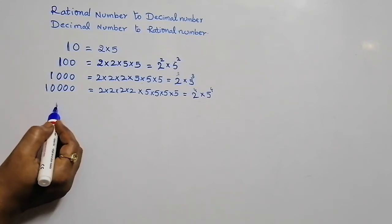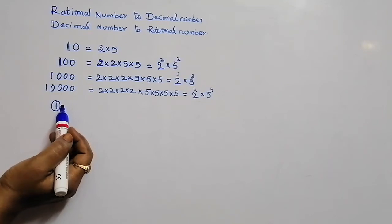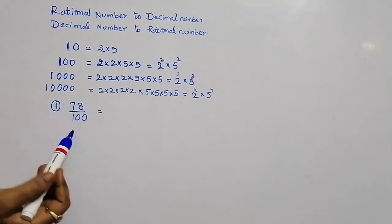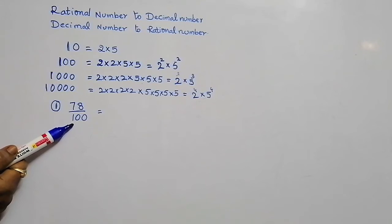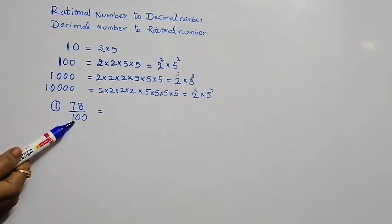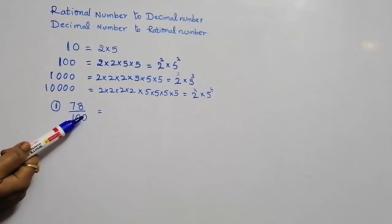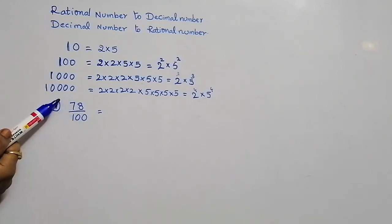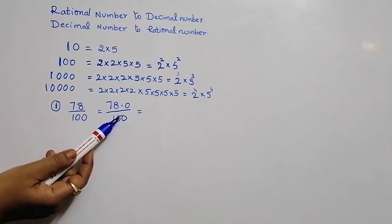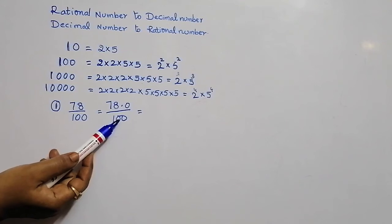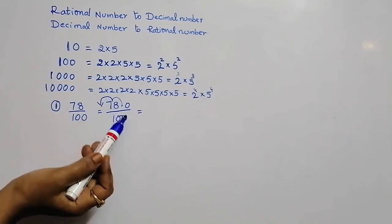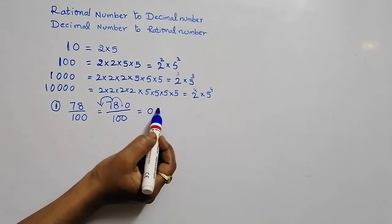Let us recall some basics. The first rational number is 78 by 100. In order to convert this into a decimal number, observe the denominator — how many zeros are there? 2 zeros. Now the decimal point moves towards the left side of the number 2 places. So we write 78.0 and move the decimal point 2 places left, which gives us 0.78.